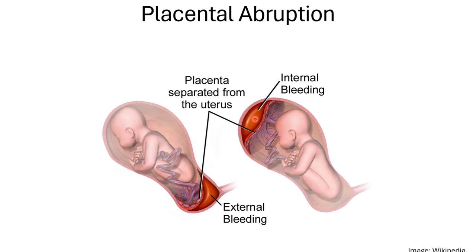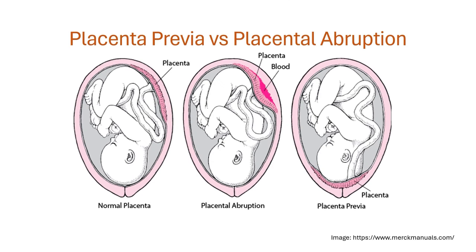Internal bleeding is called a concealed hemorrhage, which cannot be seen outside. Looking at the difference between placenta previa and abruption: in placenta previa it is simply a low-lying placenta, whereas in abruption the placenta is separated from the uterine lining earlier than it should be. In placenta previa there can be bleeding, but it is typically painless, whereas in abruption the separation causes painful bleeding.